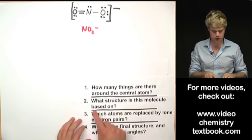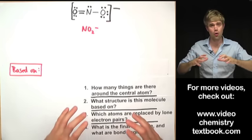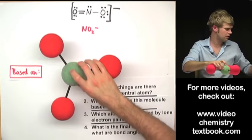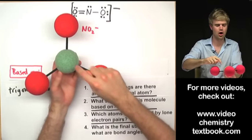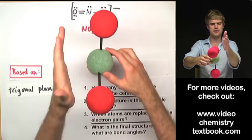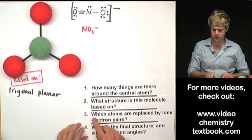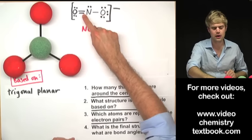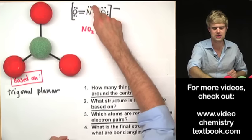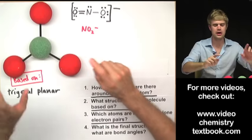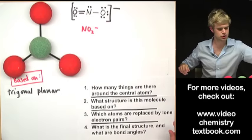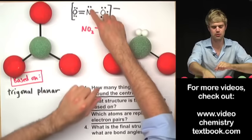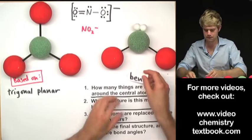With three total things, we ask what structure this molecule is based on — what structure would have three things around a central atom, all being other atoms? That would be the trigonal planar shape: three atoms around a central atom all lined up in a plane. In NO2⁻, one of those three atom positions is replaced by a lone electron pair, giving us a bent shape.